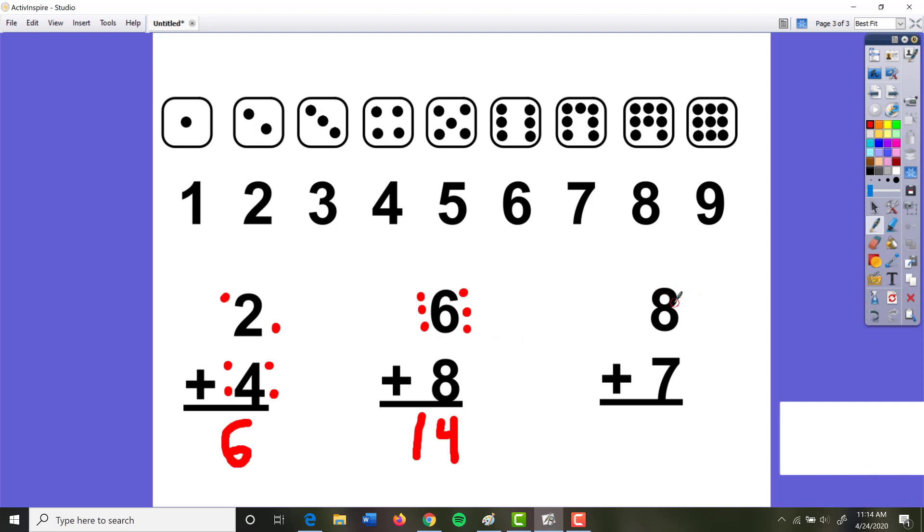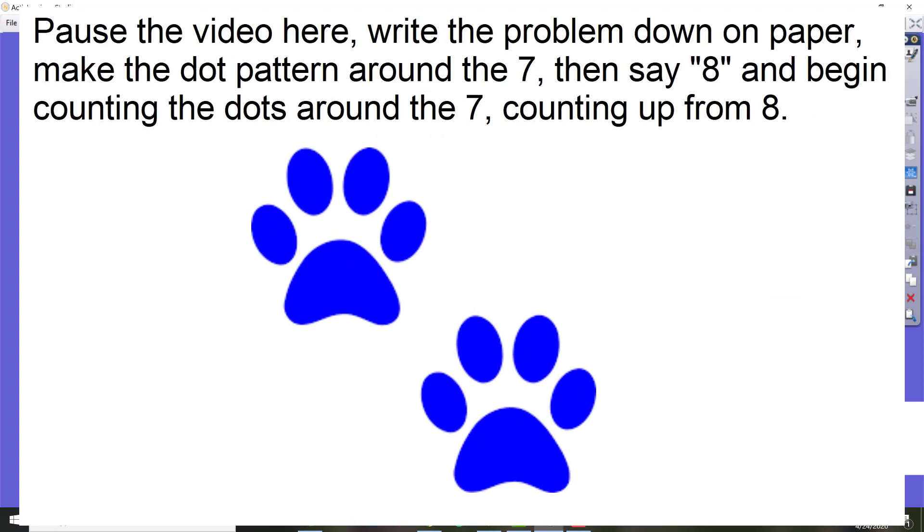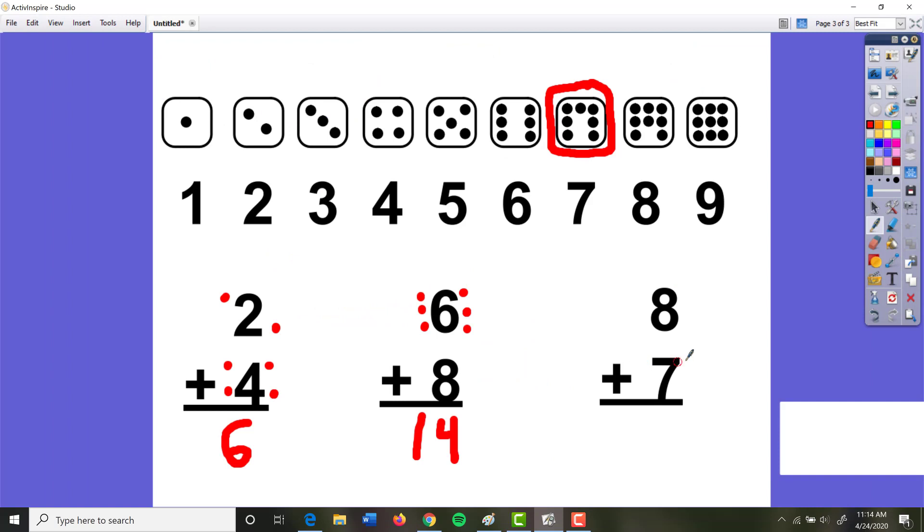So, I'm going to let you try this one on your own. You're going to say the number 8. You're going to put the 7 pattern around the number 7. So on your paper it should look like this. You've put the 7.